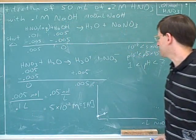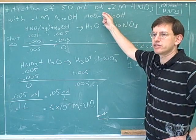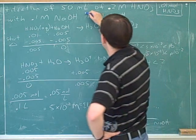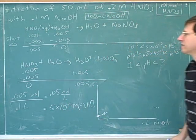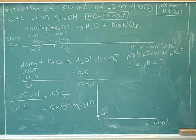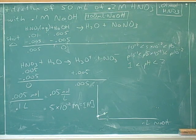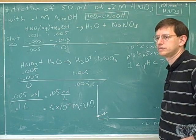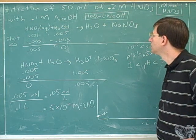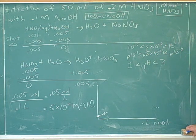Let's say we continue the titration until we've added 100 milliliters total of sodium hydroxide, starting with nothing. So let's try to analyze the pH here. If you add that much NaOH, you'd have 0.01 in the first equation — 0.01 moles of H⁺ over 150 milliliters.